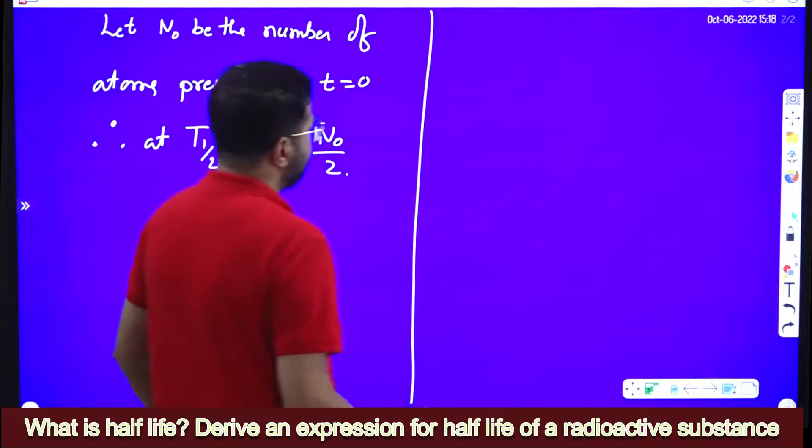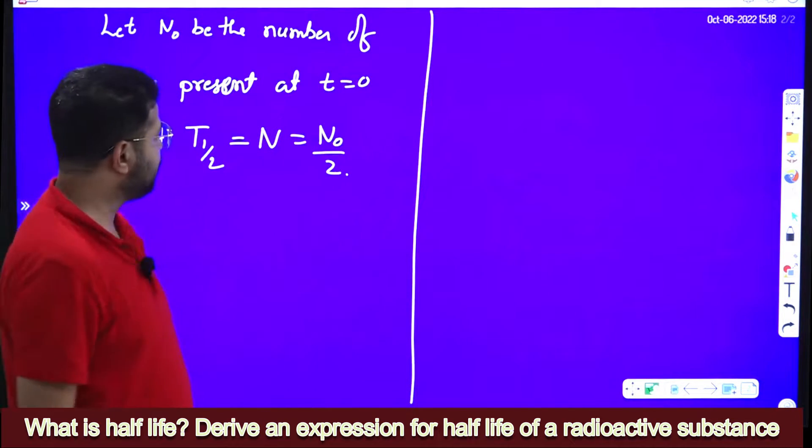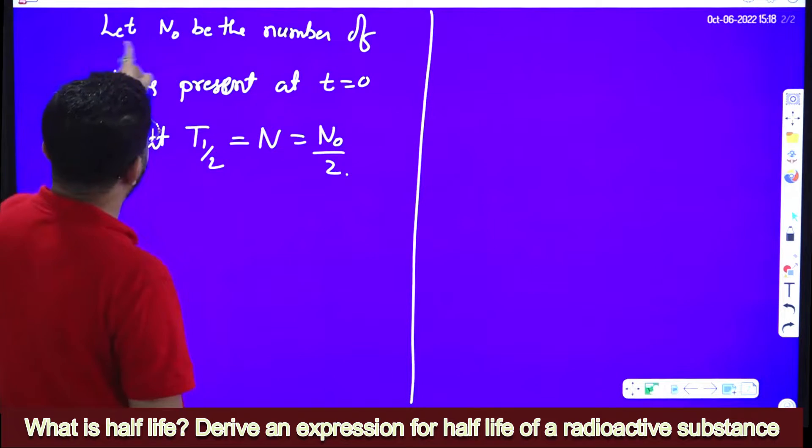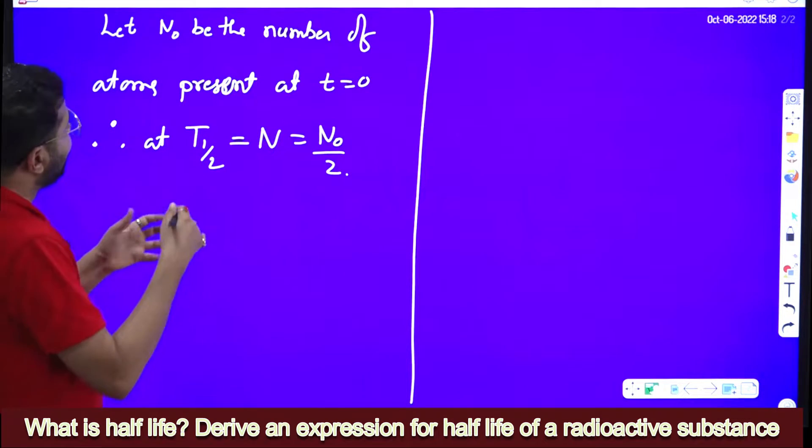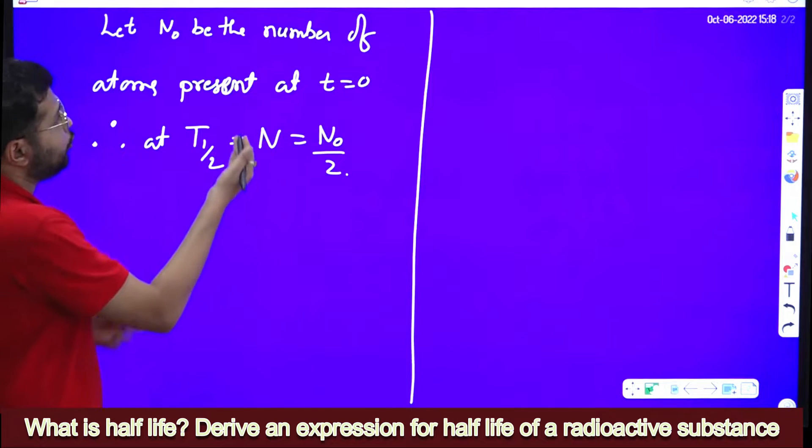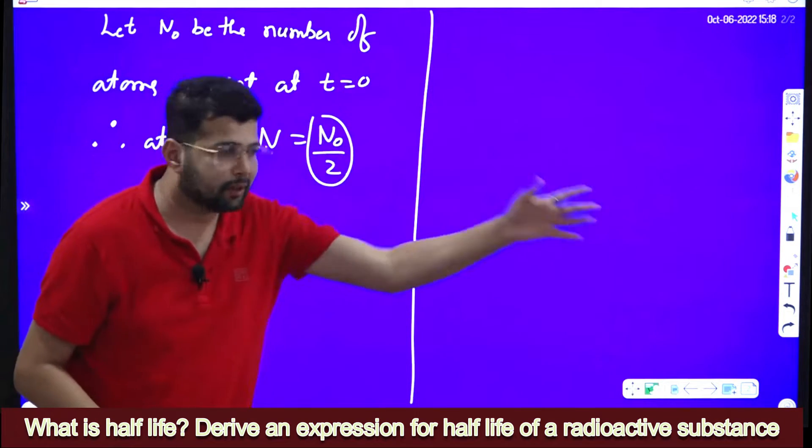Now we will derive expression for half-life using the equation N is equal to N naught into e to the power minus lambda t. Let N naught be the number of atoms present at t is equal to 0. Therefore, at half-life, at t half, how many number of atoms are there? N naught by 2, because N naught by 2 disintegrated.